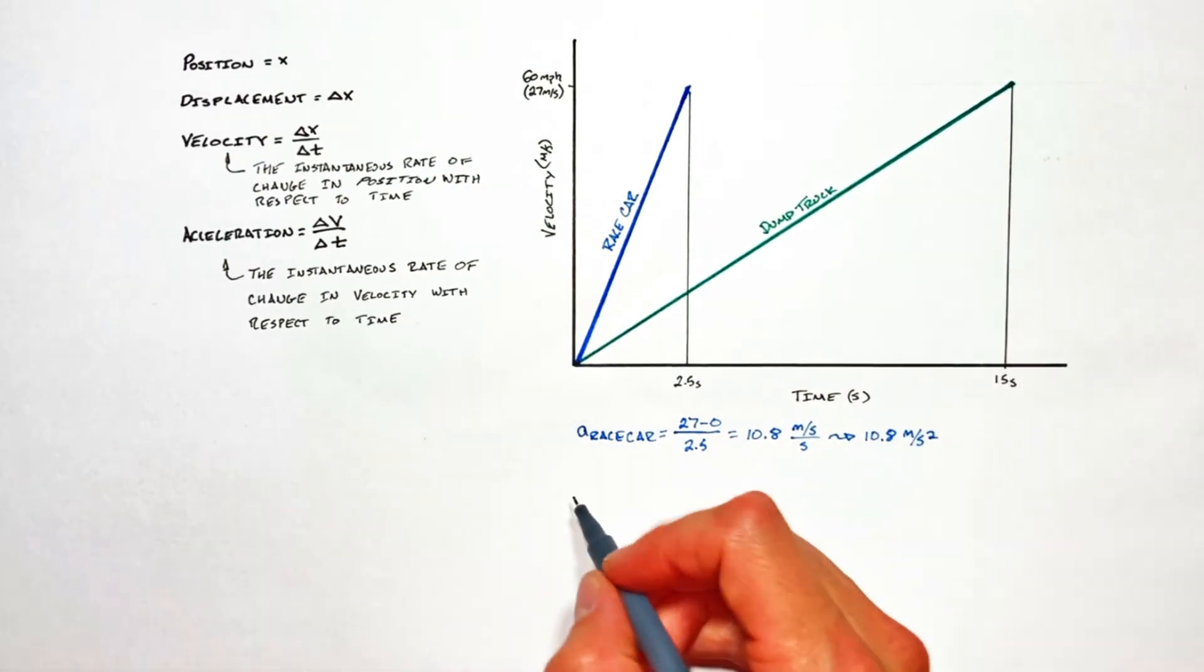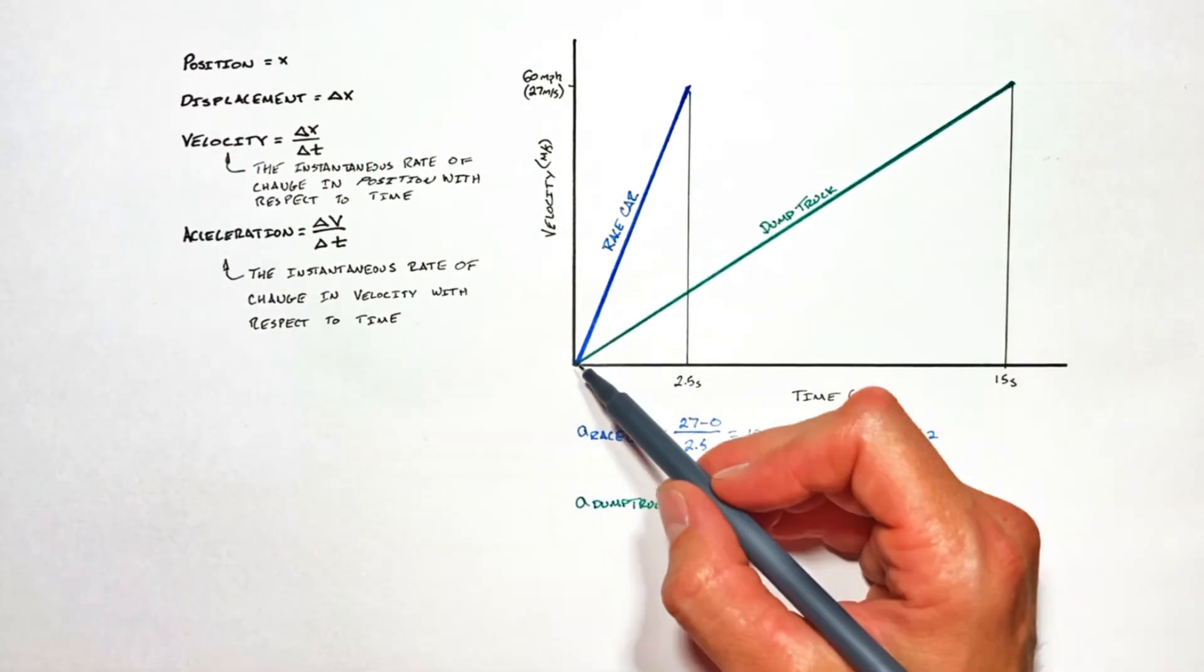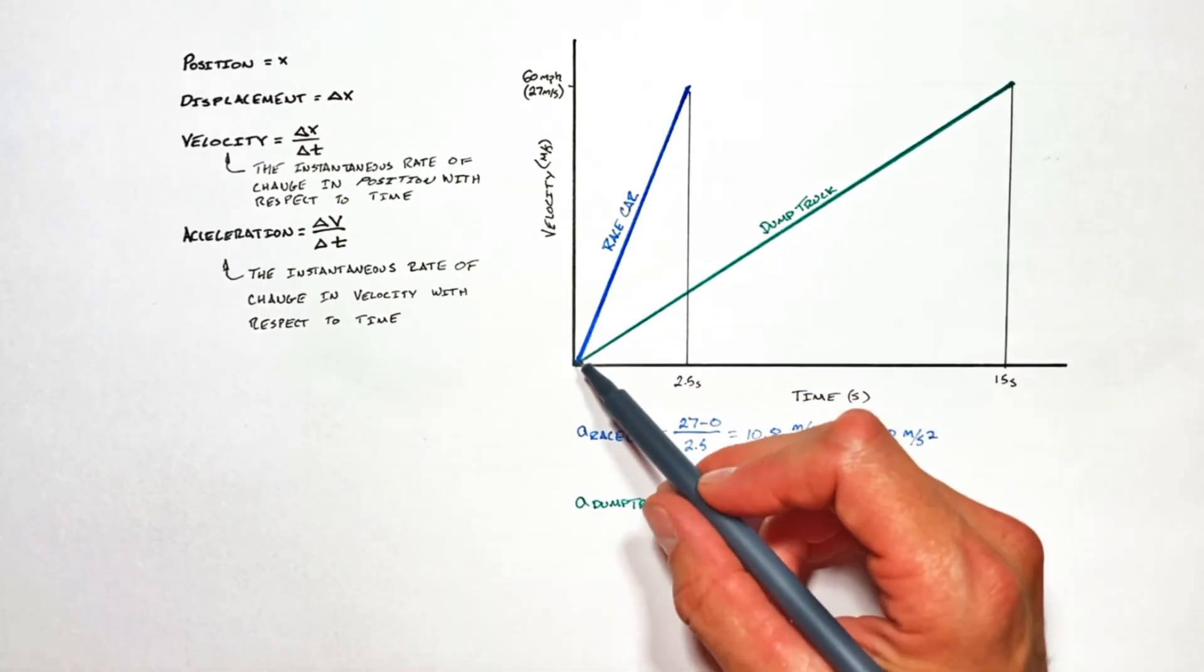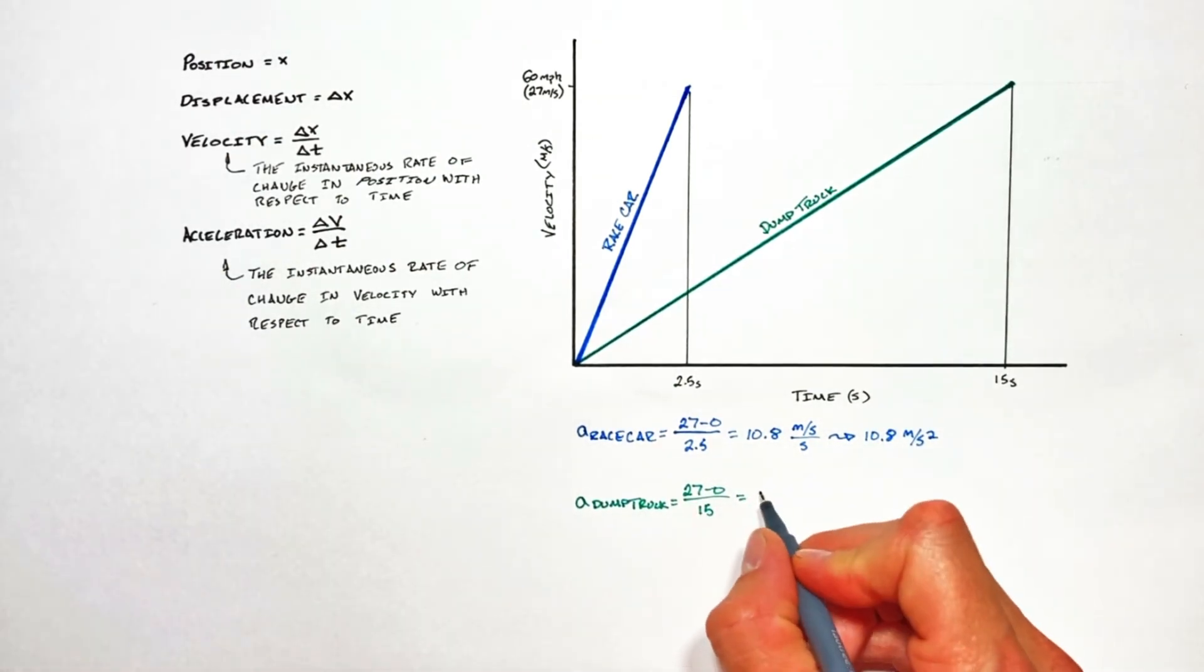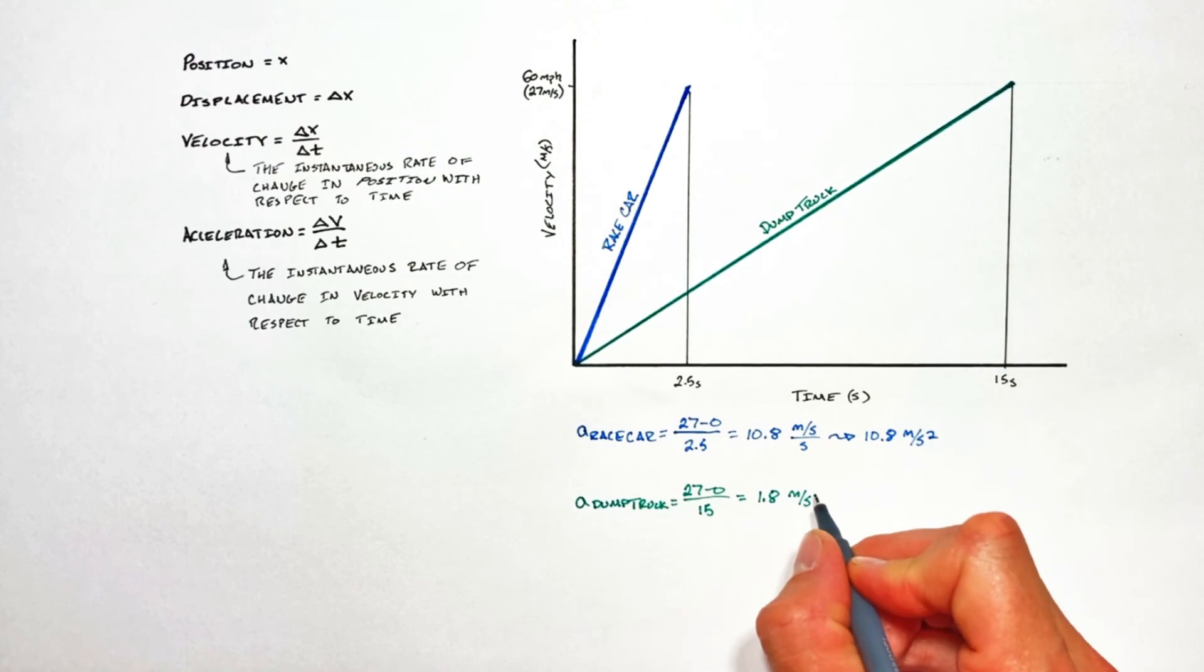Looking at our dump truck, just like the race car, it's going to start at zero and finish at 27 meters per second. But this time, the dump truck is going to take 15 seconds to speed up, giving an acceleration of 1.8 meters per second squared.